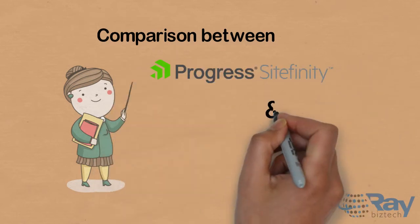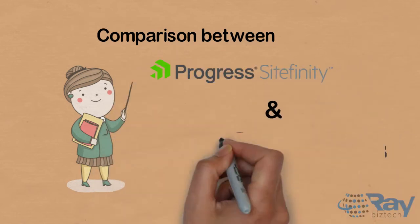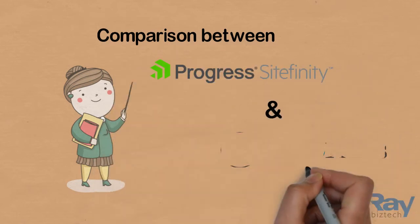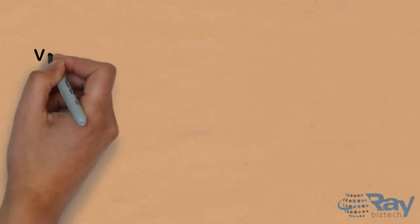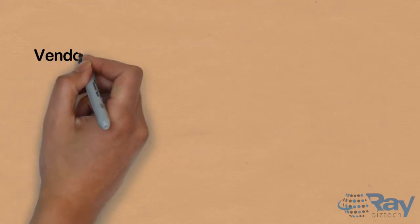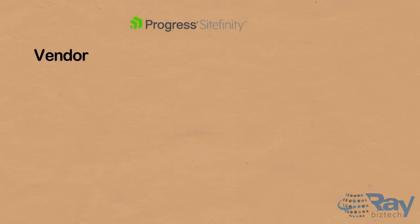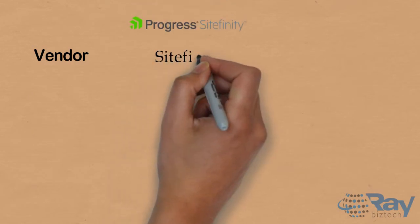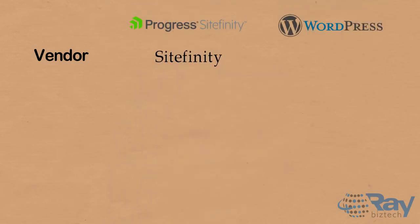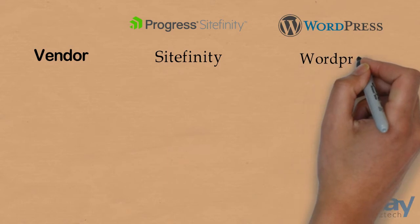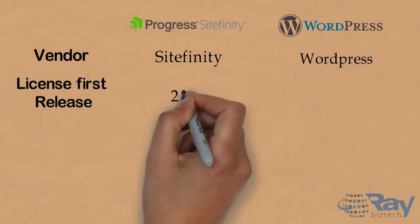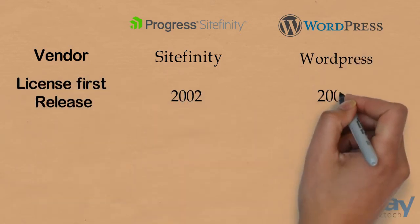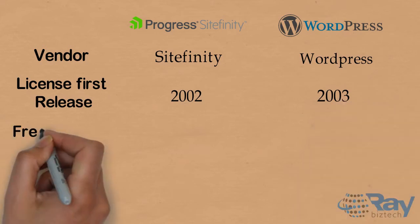Comparison between Progress Sitefinity and WordPress. The vendor for Progress Sitefinity is Sitefinity and the vendor for WordPress is WordPress.